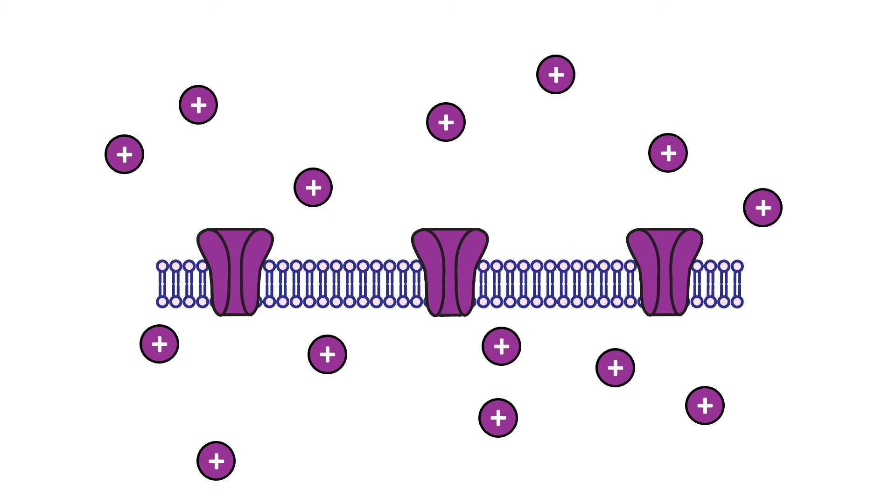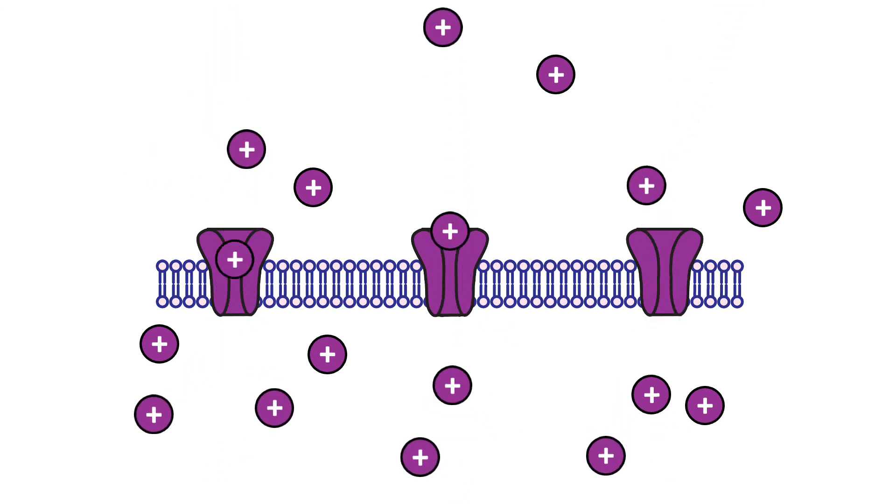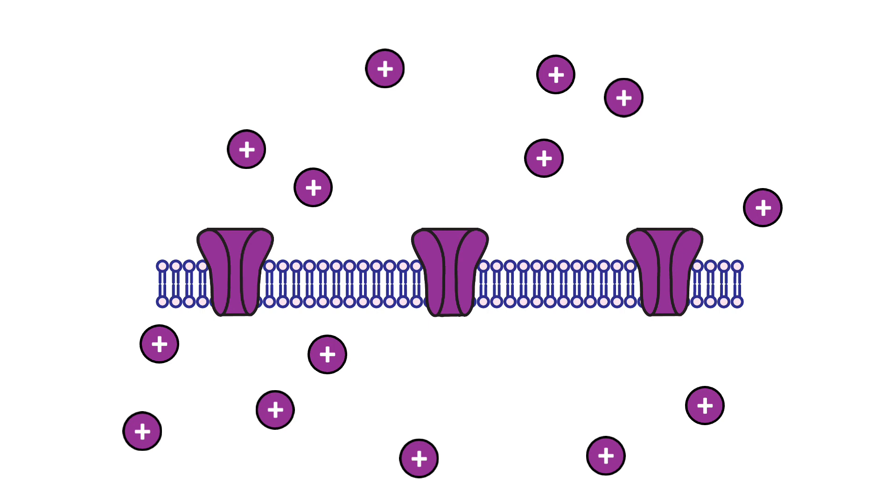When the concentration and electrical gradients for a given ion balance, meaning they are equal in strength but in different directions, that ion will be at equilibrium. Ions still move across the membrane through open channels when at equilibrium, but there is no net movement in either direction, meaning there is an equal number of ions moving into the cell as there are moving out of the cell.